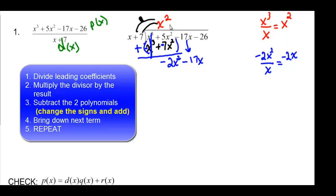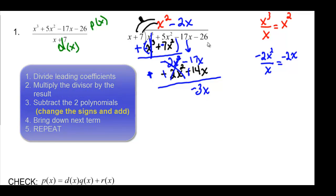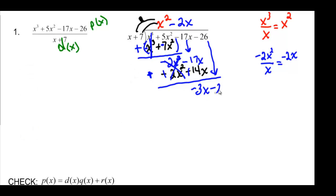So I need minus 2X. And when I multiply again, negative 2 times X is going to be negative 2X squared. Remember the black is multiplying. Negative 2 times 7 is going to give me minus 14X. And when I come in here, subtract, but that means change the signs and then I can add. Then we have this canceling out. And negative 17X plus 14X is going to be negative 3X. And bring down the last term, minus 26.